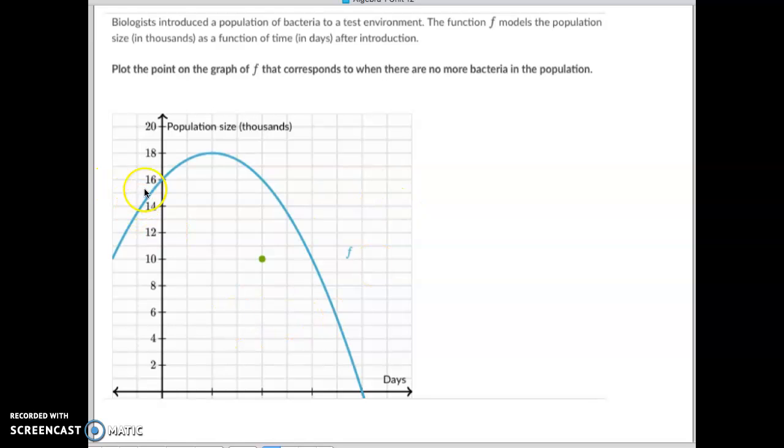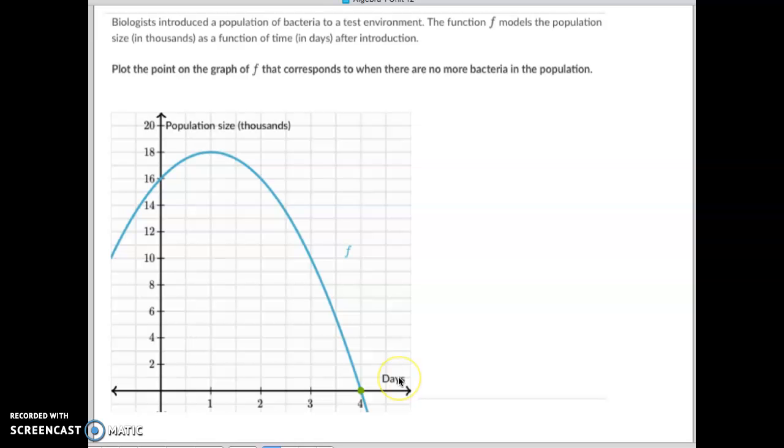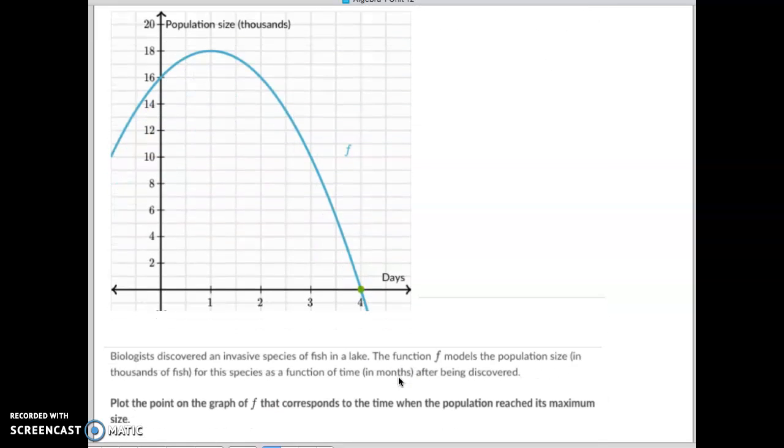Well obviously this is your population and then this is all the bacteria that's in here after so many days. So yes we had bacteria, bacteria got more, got less, got less, got less. Oh it's almost down to nothing, here's where it reaches zero. So that x-intercept is where the bacteria reaches zero, so we plot the point right down there at four days.